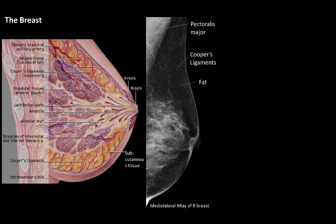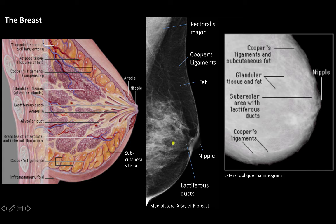This tissue is fat, which is more radiolucent than the surrounding tissues and therefore appears darker. Here is the nipple, which receives the lactiferous ducts in this region, draining the lobules of the mammary gland, which occupy this space. This is a mammogram — a type of low-dose x-ray used specifically for imaging the breast.